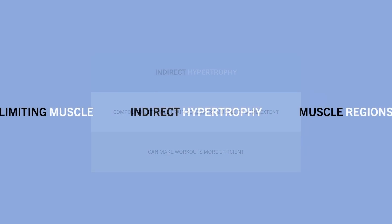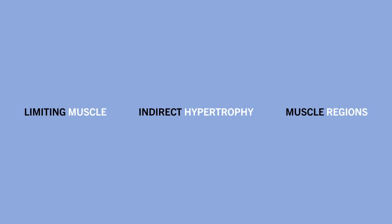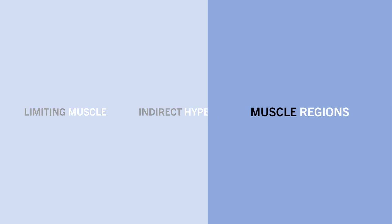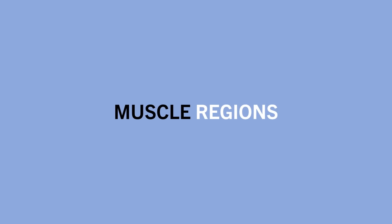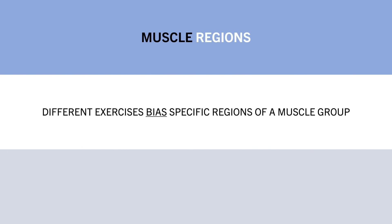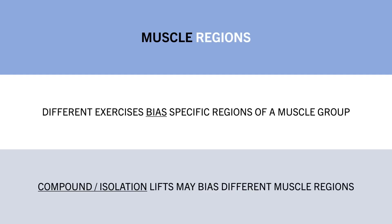Another consideration regarding compound versus isolation lifts is what regions of a muscle are trained via each specific exercise. Different exercises will usually bias certain portions of a muscle group. So even if an exercise trains a muscle group, it may not train each portion of the muscle equally. Therefore, it may be beneficial to preference either compound or isolation lifts based on which muscles are biased.